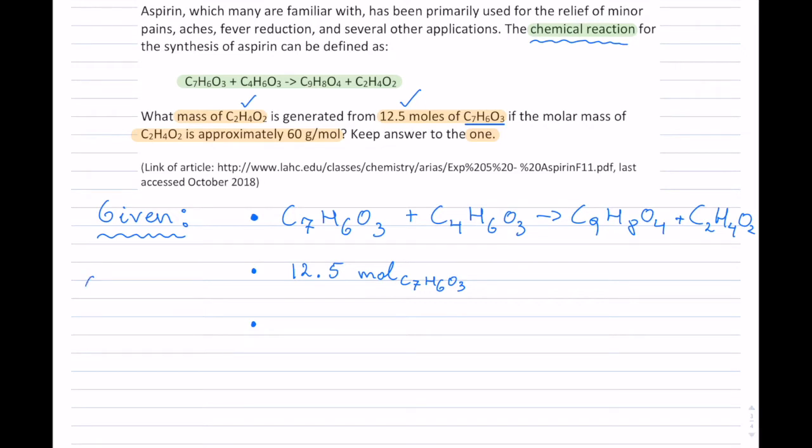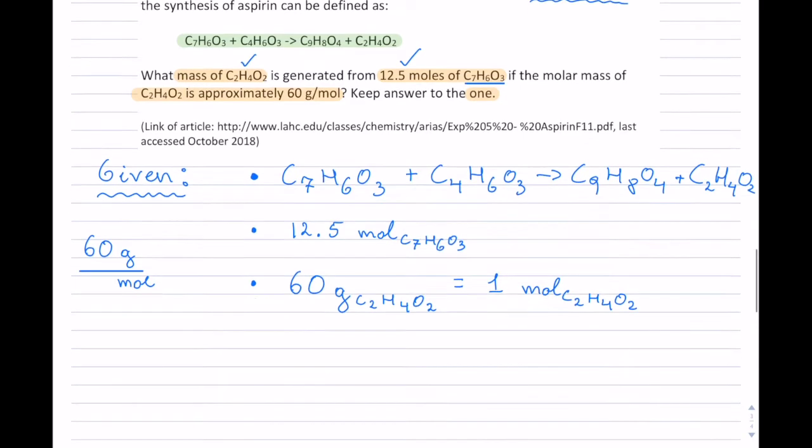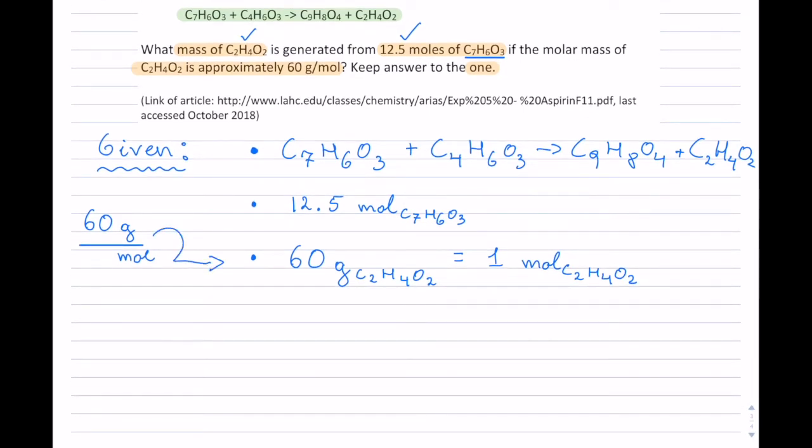Now, the way that this is written, so they have written it as 60 grams per mole in this way. And this basically means, and I like to write it in the following way, so I have 60 grams, and it belongs to C₂H₄O₂. And instead of putting it over a mole, I say this equals to 1 mole of C₂H₄O₂. So that's the way that I like to transition this into my given. This actually helps me a little bit more.